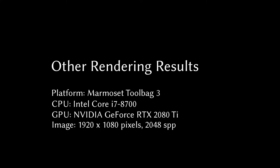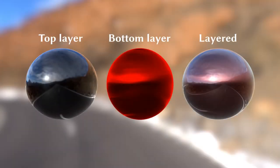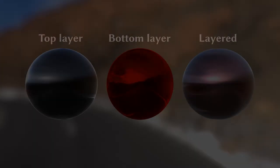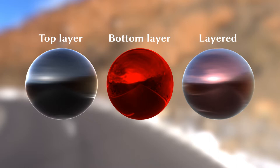Now, let us show you the other rendering results using the proposed method. This is a movie for a rough metallic material covered by a smooth clear coat. This is a movie for a smooth metallic material covered by a rough clear coat.